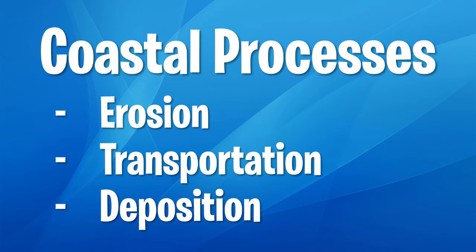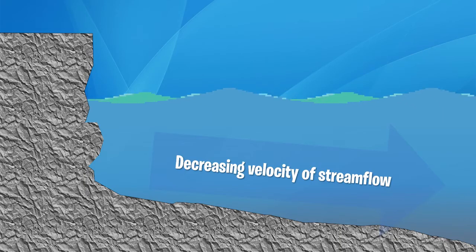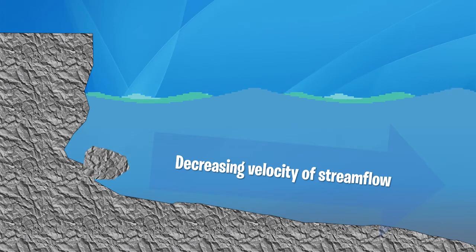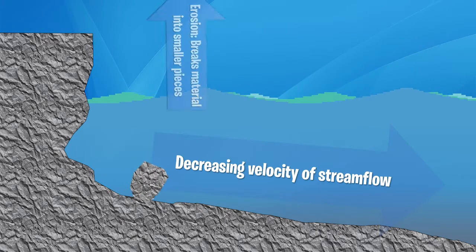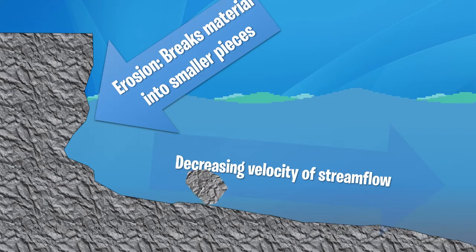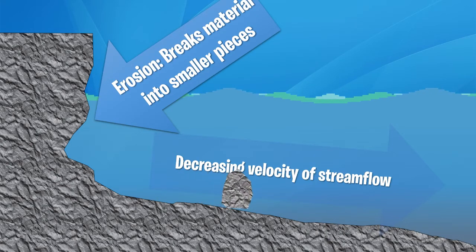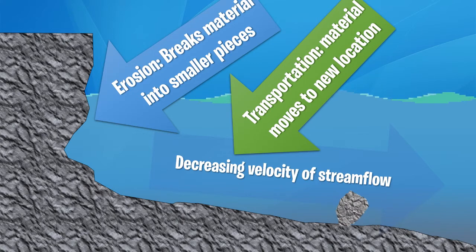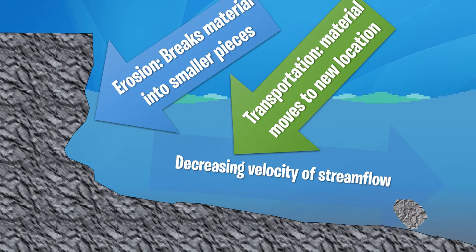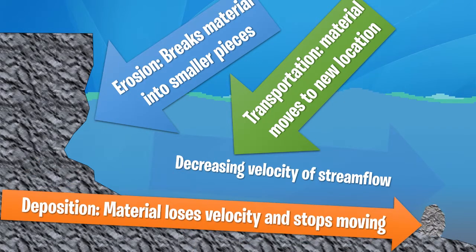Coastal processes fall into either erosion, transportation or deposition. In this example, we can see how erosion breaks materials into smaller pieces. Transportation is the act of moving those materials to a new location. And deposition is when those materials lose velocity and transportation stops, resting the sediments where they lay.